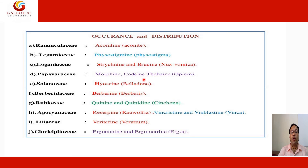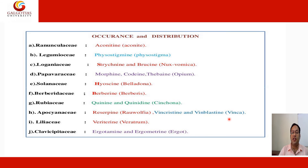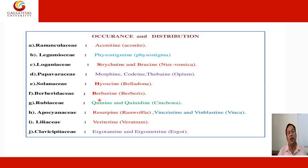Further plant families containing alkaloids: Papaveraceae — morphine, codeine, thebaine in opium; Solanaceae — hyoscine and belladonna; Berberidaceae — berberine in Berberis; Rubiaceae — quinine and quinidine in cinchona; Apocynaceae — reserpine in Rauwolfia, vincristine and vinblastine in Vinca; Liliaceae — veratrine like Veratrum; Clavicipitaceae — ergotamine and ergometrine in the ergot of Claviceps purpurea. There are different plants belonging to different families which contain alkaloids as their active molecules.